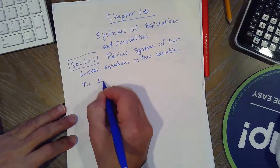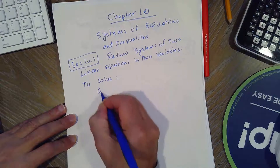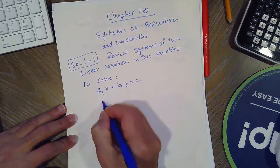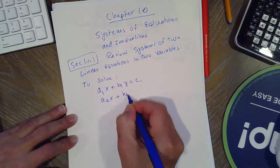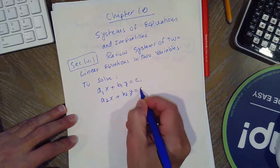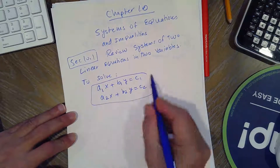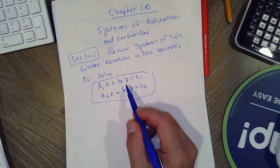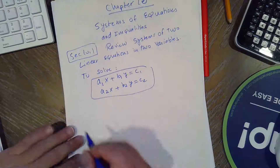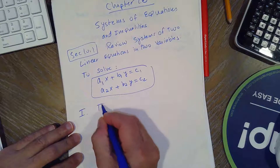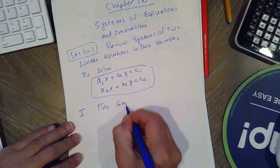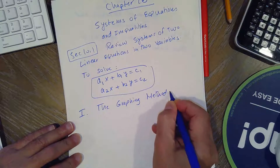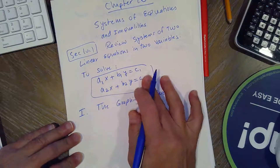We're going to learn how to solve the system A1X plus B1Y equals C1, and A2X plus B2Y equals C2. So we have two linear equations, meaning two lines. Graphically speaking, the first method is called the graphing method — I will be graphing two lines in the plane.